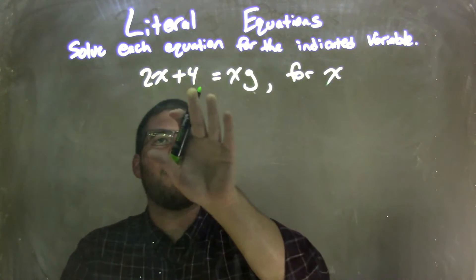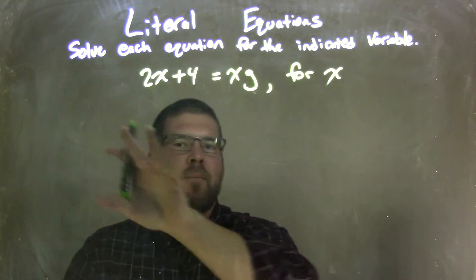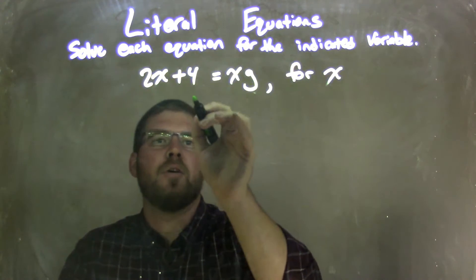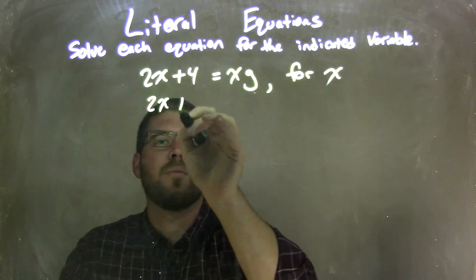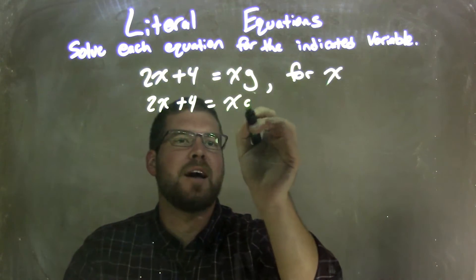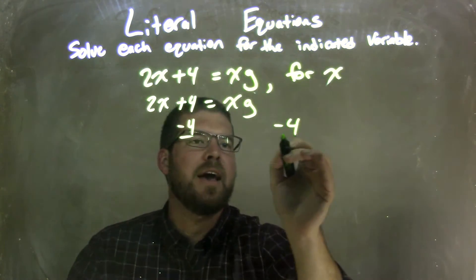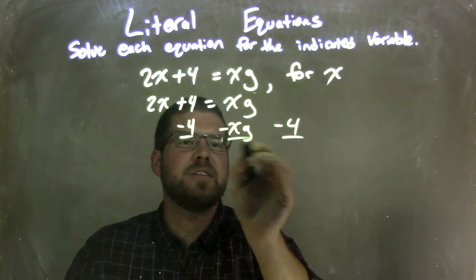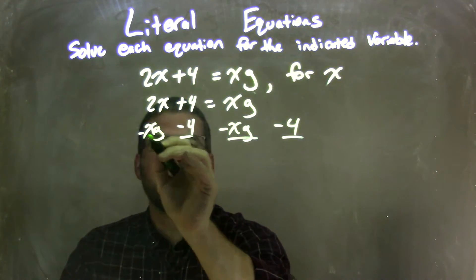What I'm going to do here is bring my numbers to the right and my variables to the left. So I'm going to rewrite this, 2x plus 4 equals x times g, and I'm going to subtract 4 from both sides and subtract xg from both sides.